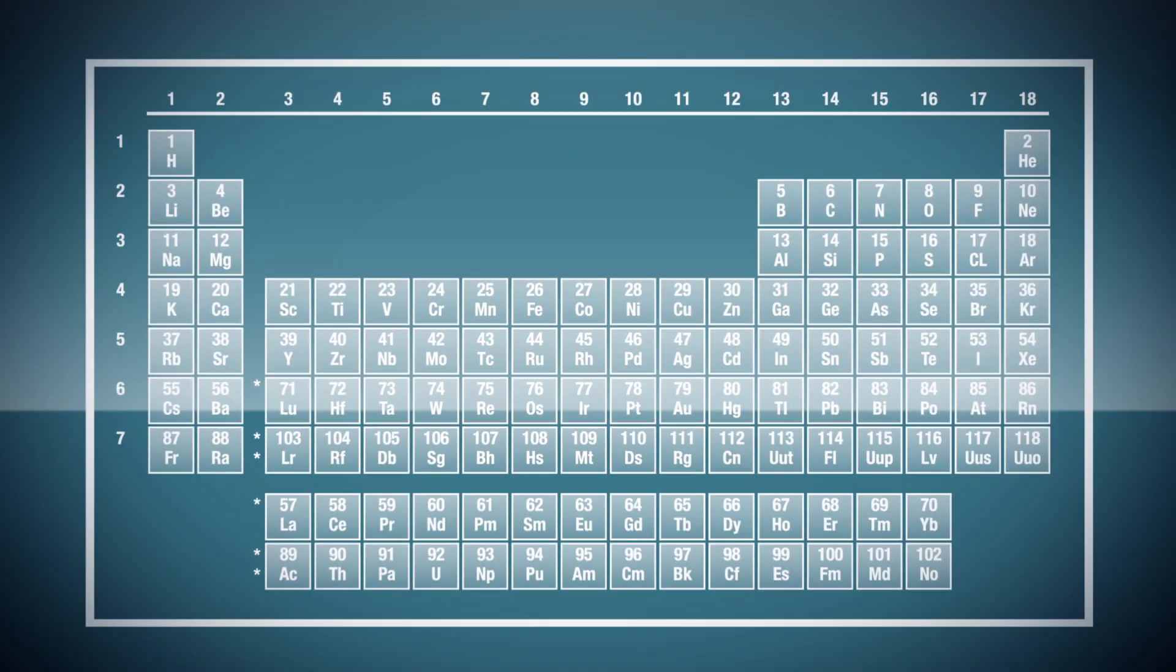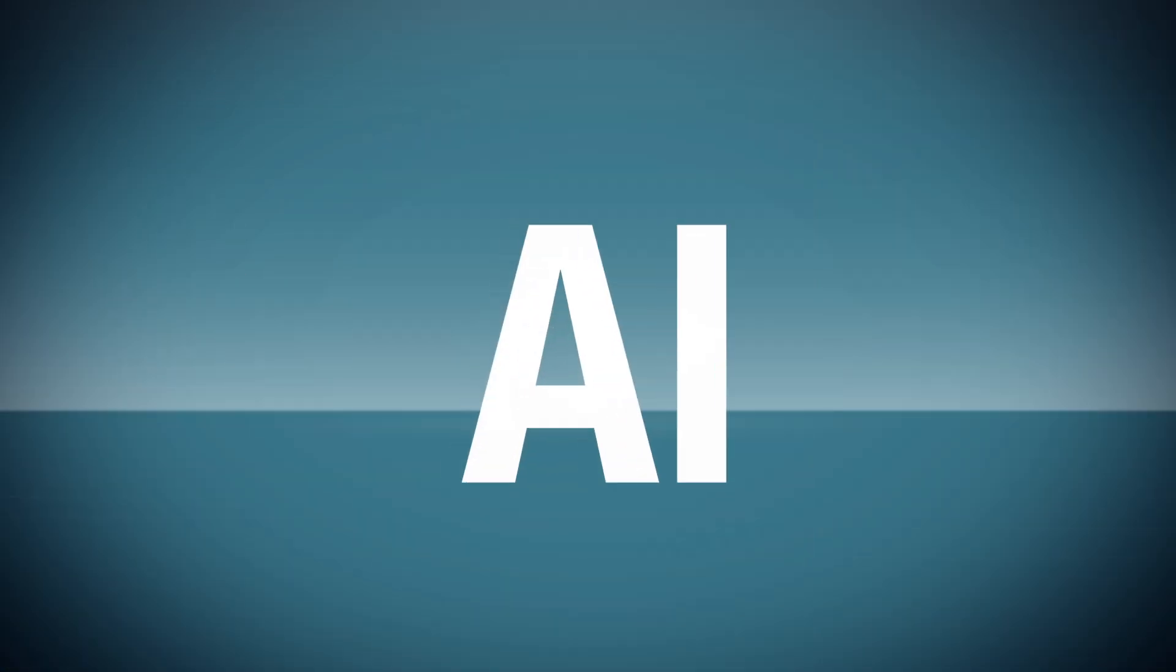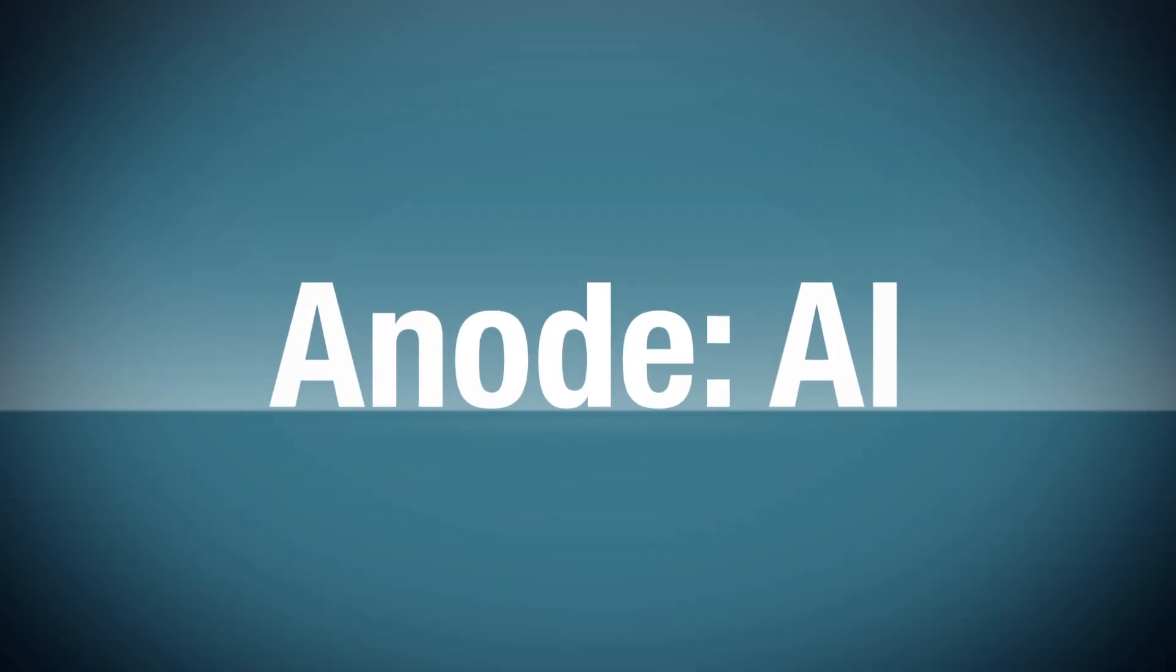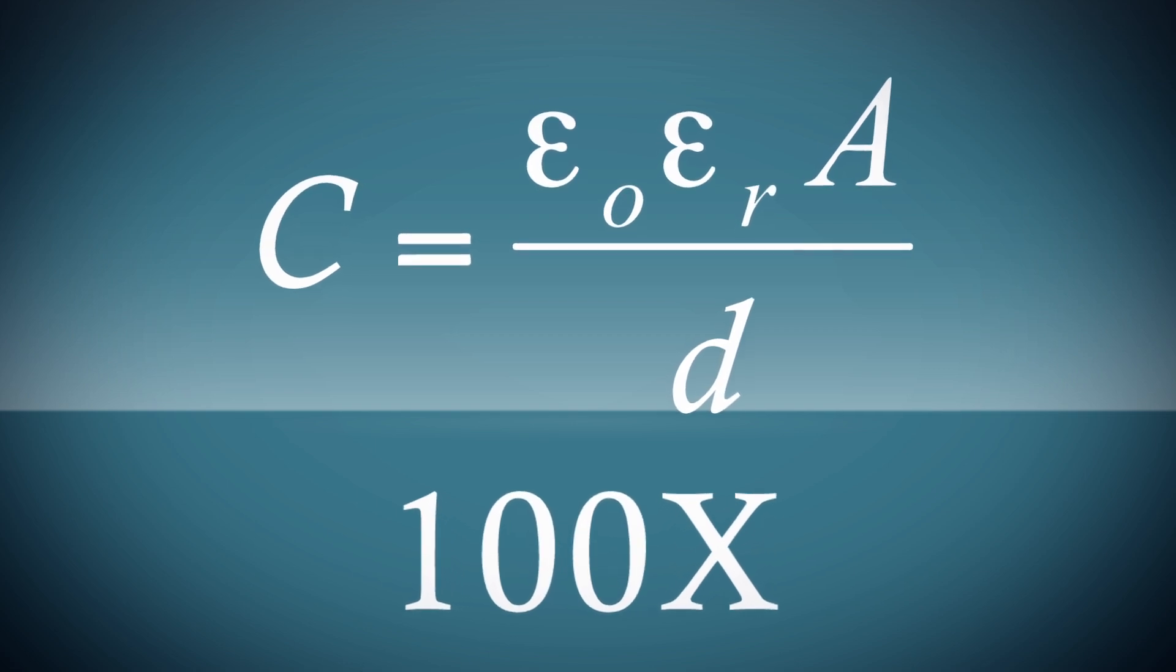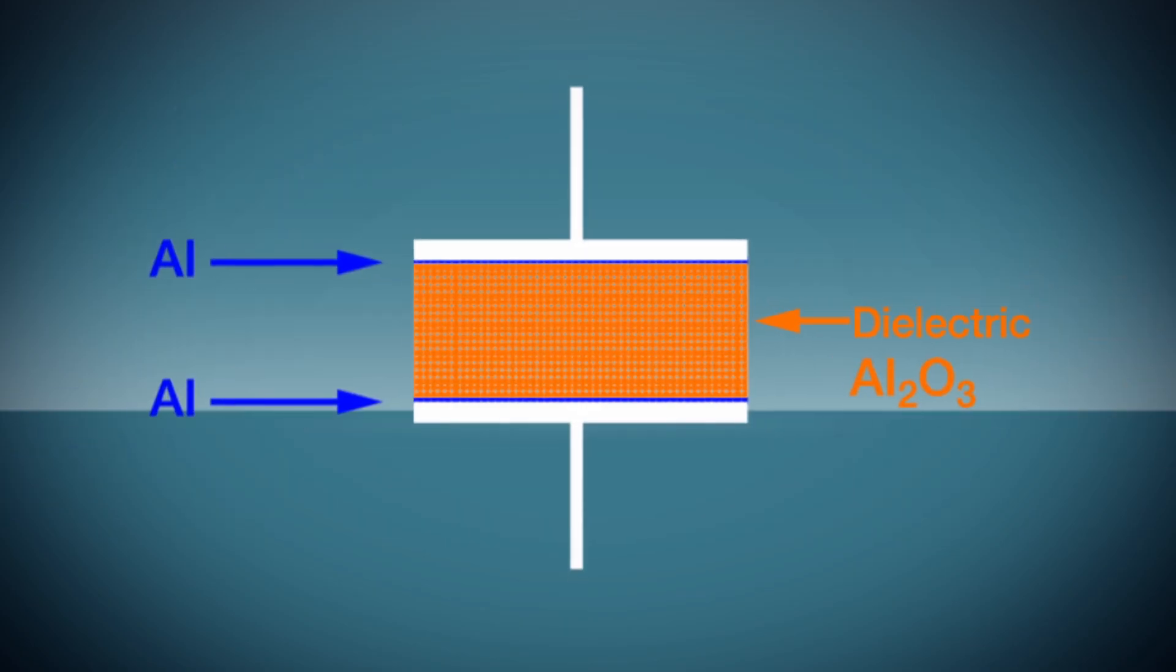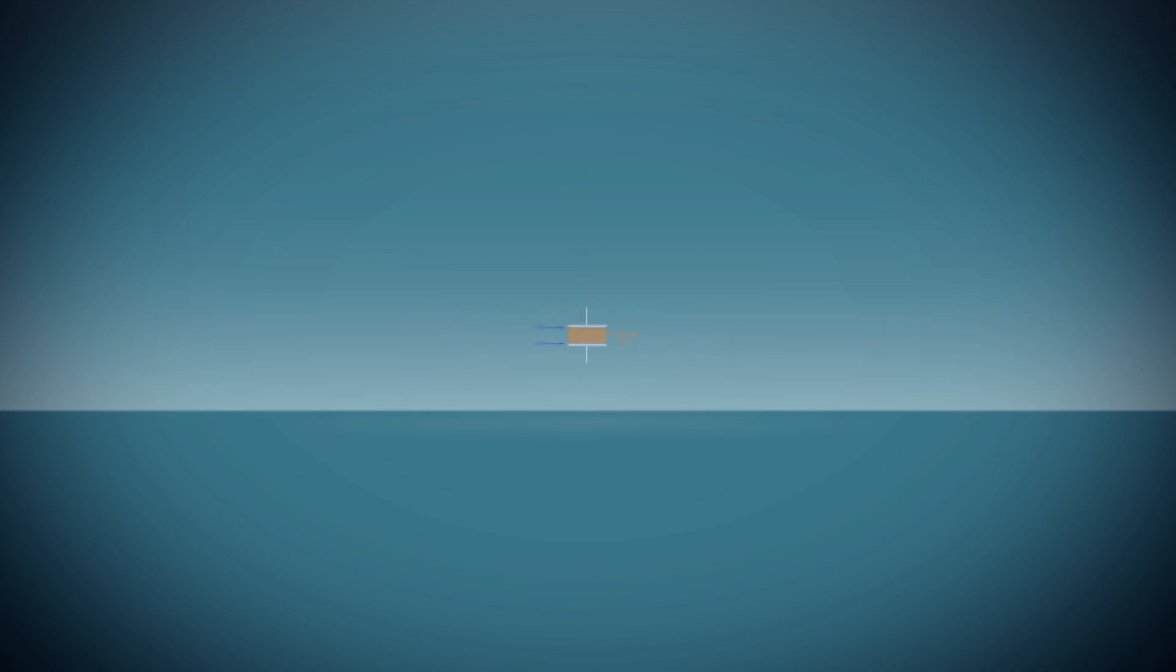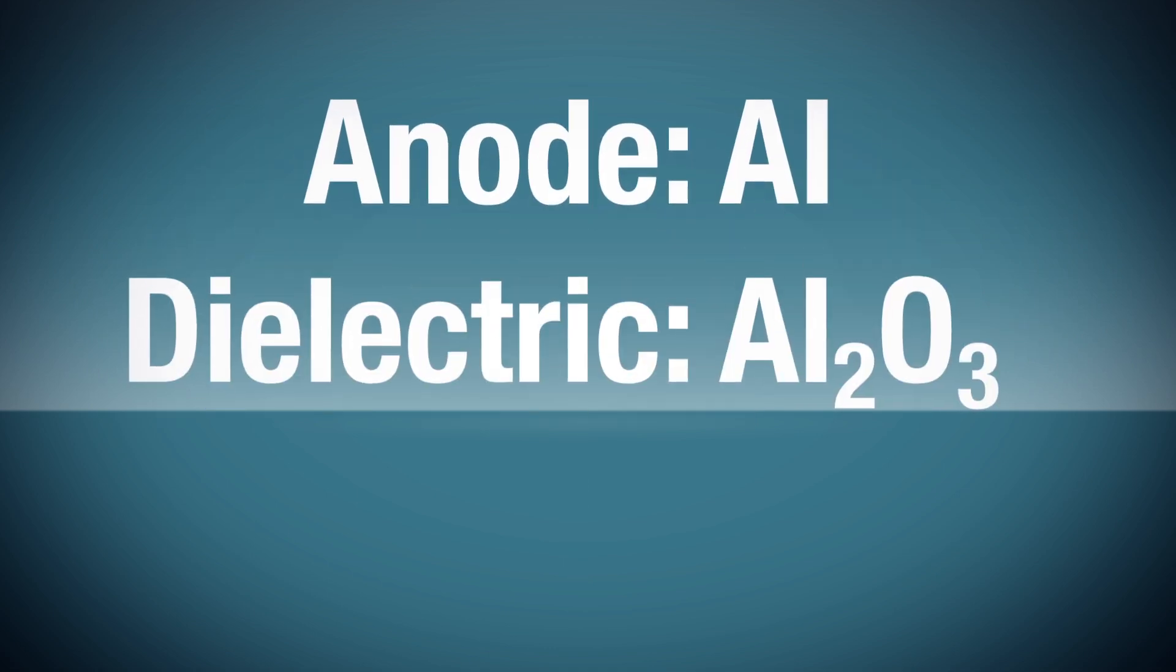Construction starts with etched and formed aluminum foil as an anode. The etched foil provides up to 100 times more surface area than raw foil. This increase means more surface area to grow the aluminum oxide, which is the dielectric layer.